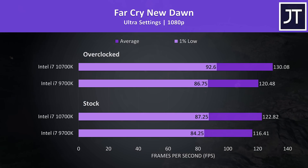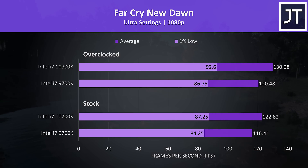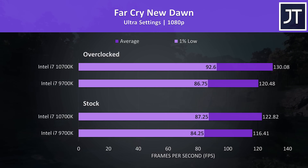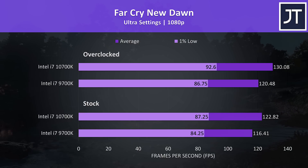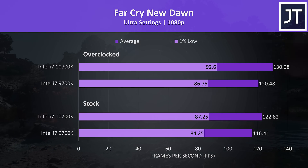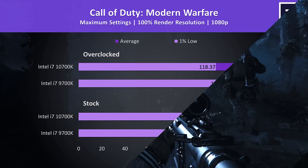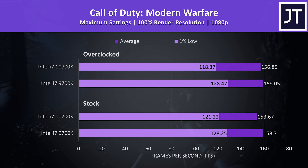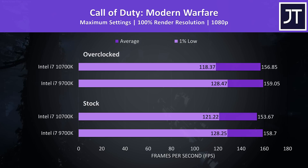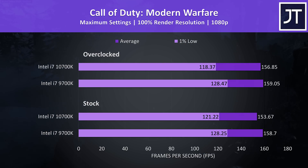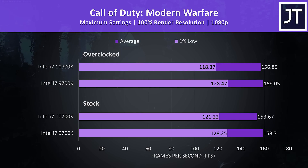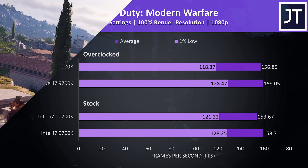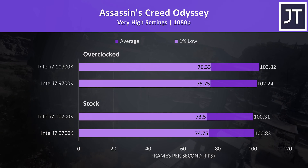Now for some overclocked gaming results. In Far Cry New Dawn it was possible to get a small boost — 8 FPS on the 10700K and 4 FPS on the 9700K, which translates to 6% and 3.5% performance improvements respectively. In Call of Duty Modern Warfare the overclocks caused mixed results; even at stock the 9700K was ahead of the 10700K at 1080p, and this was also observed at 1440p. There wasn't much change in Assassin's Creed Odyssey either — just a 2-3 FPS boost for each processor.